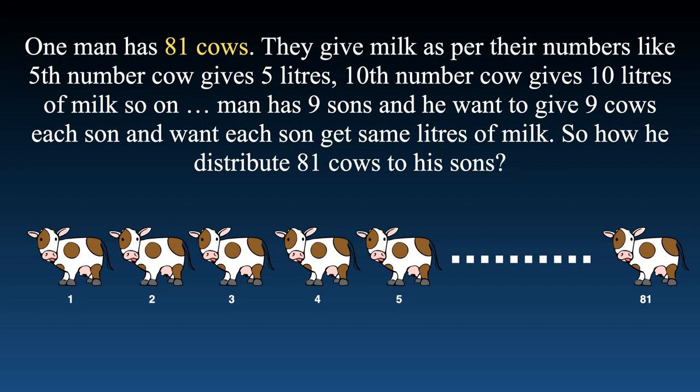Welcome to Simply Logical. In this puzzle, one man has 81 cows. They give milk as per their numbers — the fifth cow gives 5 liters of milk, the tenth cow gives 10 liters of milk, the 81st cow gives 81 liters of milk, and so on. That man has nine sons and he wants to give nine cows to each son, with each son getting the same liters of milk. So how does he distribute those 81 cows to his sons?